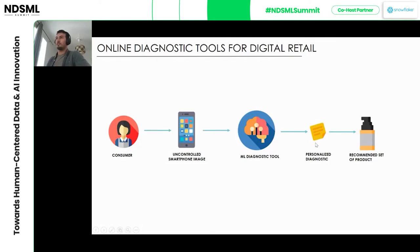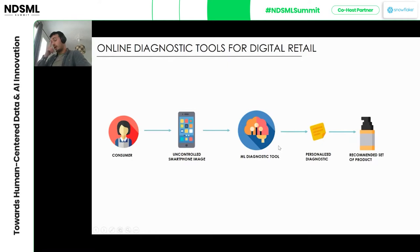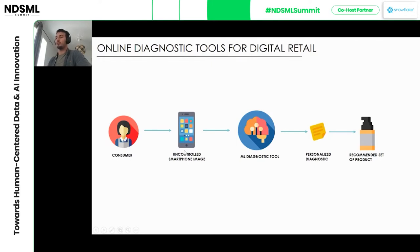These tools produce a personalized diagnostic specific to the consumer, in the same way a beauty advisor would in a physical shop, and out of this personalized technology we want to get a recommended set of products — a recommendation that is really tailored to the consumer's needs. The important keyword is 'uncontrolled smartphone image,' because you're getting an image from a smartphone you don't know, which creates interesting challenges.